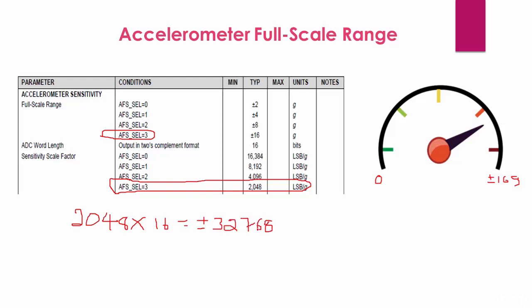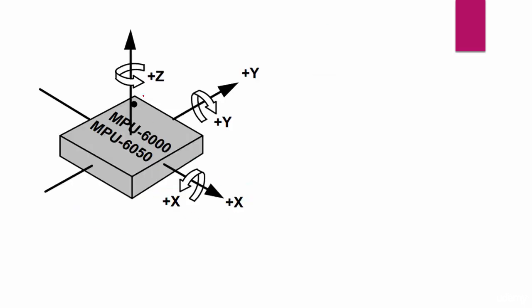That makes sense. For every g the sensor will produce 2048.